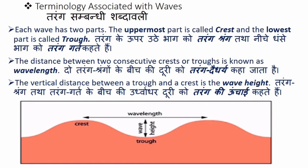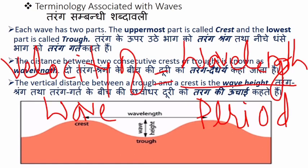To find the velocity of a wave, divide the wavelength by the time period. This means: wave velocity = wavelength ÷ period. The wavelength is the distance between two crests or two troughs, and dividing it by the period gives you the wave velocity.